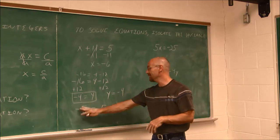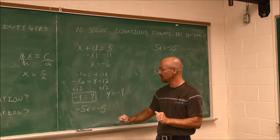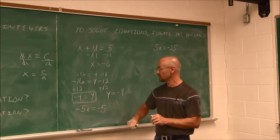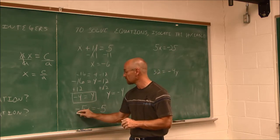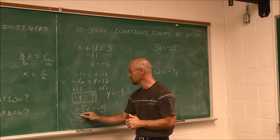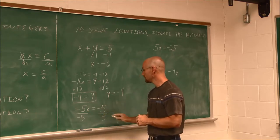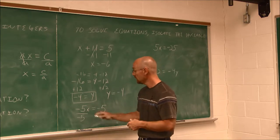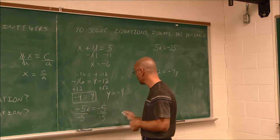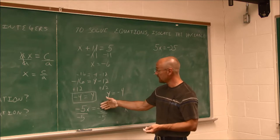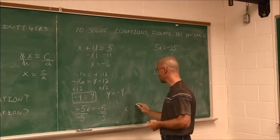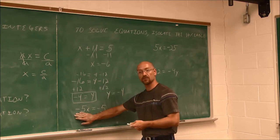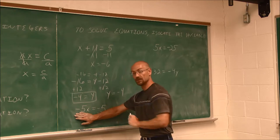Looking at this example: here's my x, I've got to get it by itself. The operation — this would be the integer negative 5 as the coefficient, being multiplied by x. To undo multiplication, I use division. What I do to one side, I do to the other. Negative 5 divided by negative 5: two negatives is a positive in multiplication or division, so this reduces to positive 1 — leaving 1x. On this side, negative 5 divided by negative 5 is positive 1. x equals 1. Let's check: negative 5 times 1 equals negative 5? Yes — anything times 1 is itself. That's a true statement.